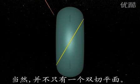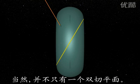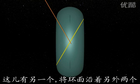Of course there is not just one bi-tangent plane. Here is another one, cutting the torus along two other Villarceau circles.